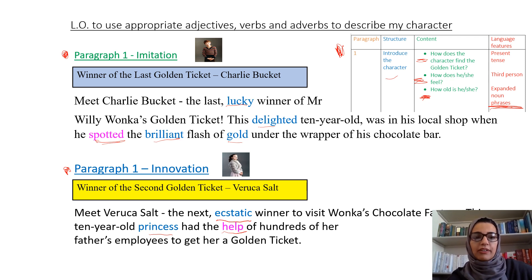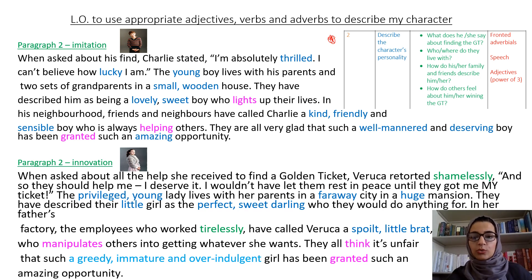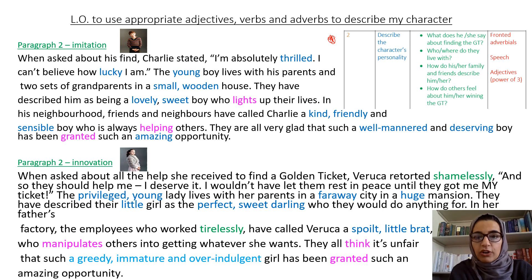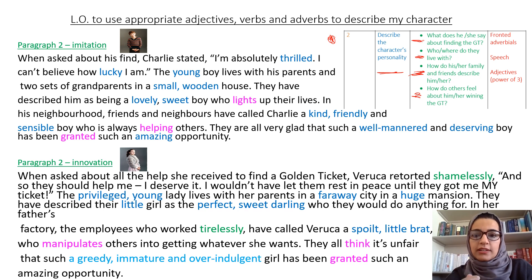Let's move on to the second paragraph. So this is paragraph two — another very busy slide. In the corner we've got the boxing up grid. Remember, this boxing up grid is invaluable when we write our own innovation and invention text. In paragraph two, we need to describe the character's personality, and all of these four points need to be included: what does the character say about finding the golden ticket, who do they live with, how do the family and friends describe her, and how do other people feel about your character winning?